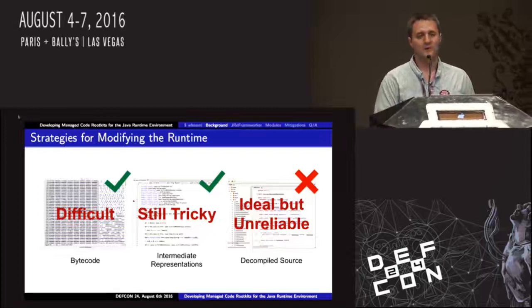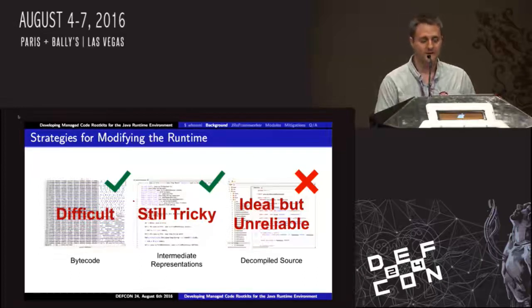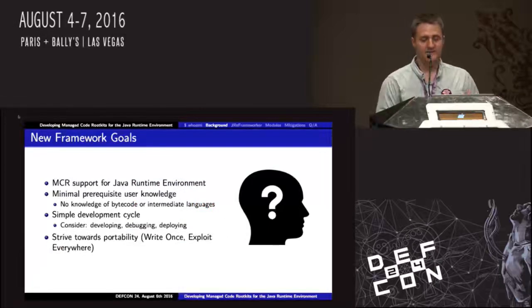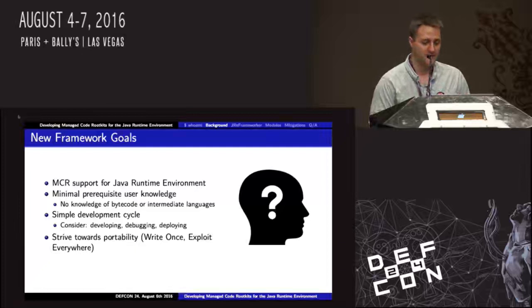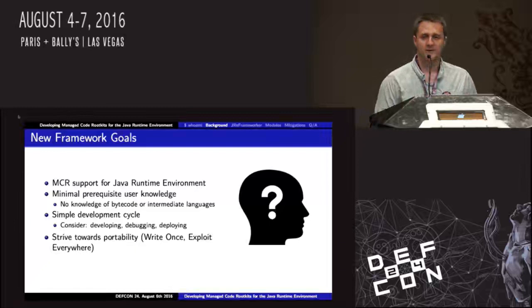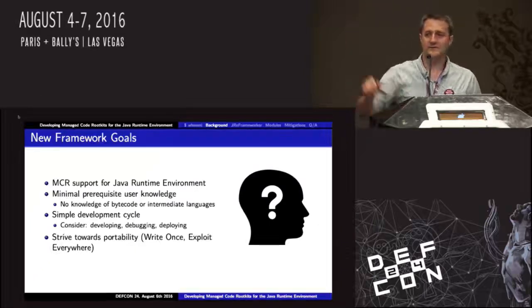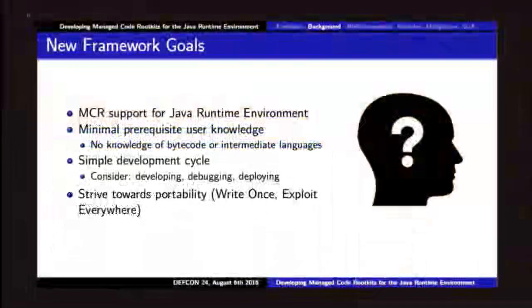I really wanted to lower the barrier to entry so that if you know how to write basic Java programs, you can write a managed code rootkit too. That's the new goal of the framework: support the Java runtime environment with a really low knowledge prerequisite. Quick show of hands — who has ever written just a basic Java program? So you guys can all write a managed code rootkit now. That's fun, and also terrifying.